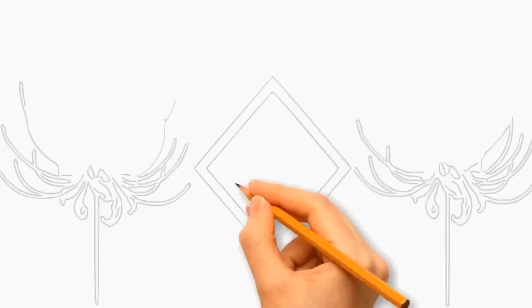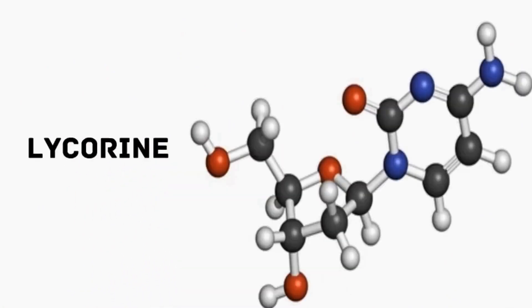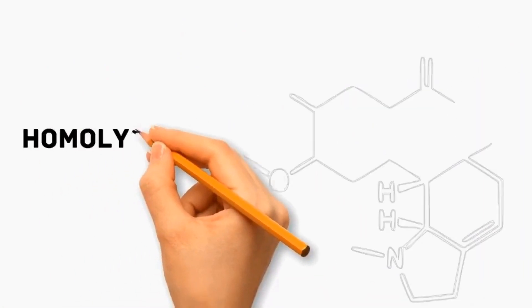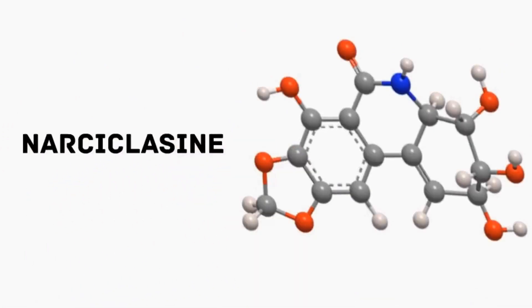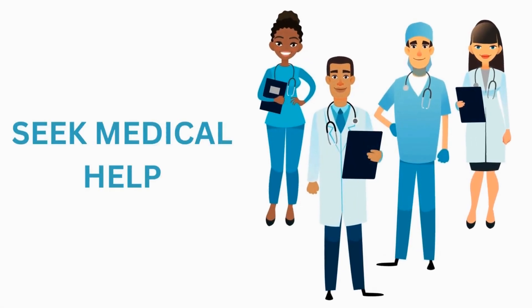The toxicity of Red Spider Lily is due to the presence of some compounds. Licorine produces vomiting and diarrhea. Homolicorine has similar toxicity to licorine. Narciclacine disrupts cell division. Galanthamine inhibits the treatment of Alzheimer's disease. Seek medical help if you get seriously injured by Red Spider Lily.